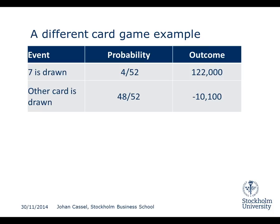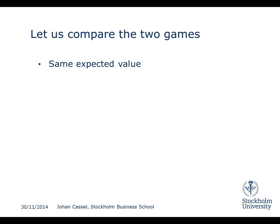So let's take a different card game. The same rules apply, but in this case if you draw a 7 you win 122,000 Kronor, and if any other card is drawn you lose 10,100 Kronor. It turns out that even in this case the expected value is exactly the same, at 61.54, and I leave it as an exercise for you to check that.